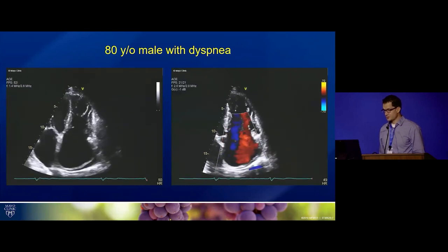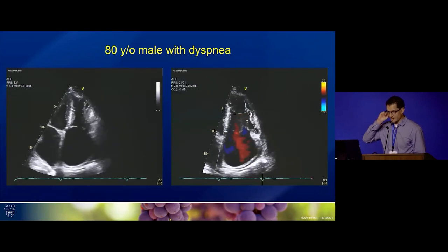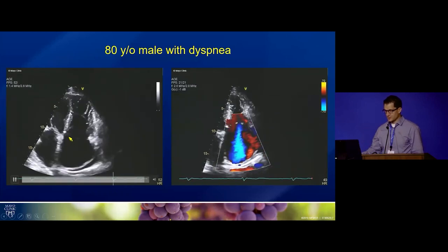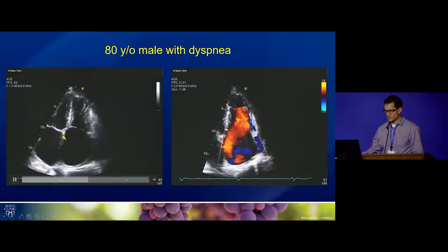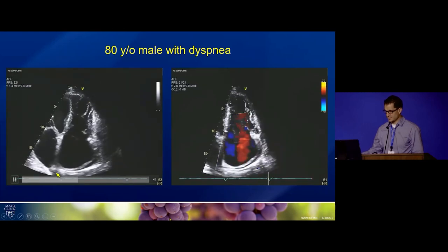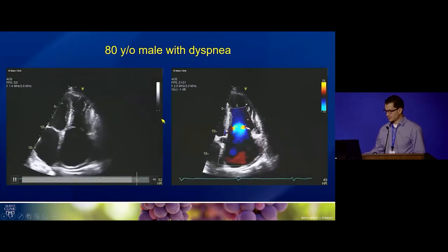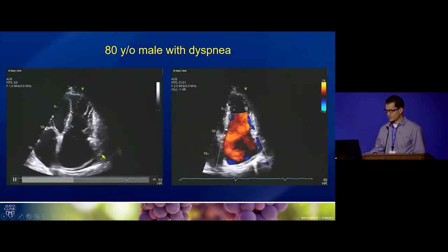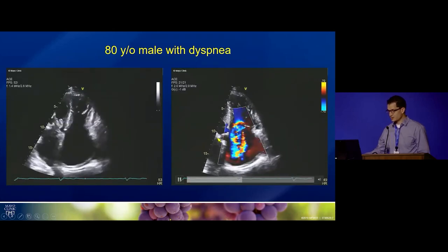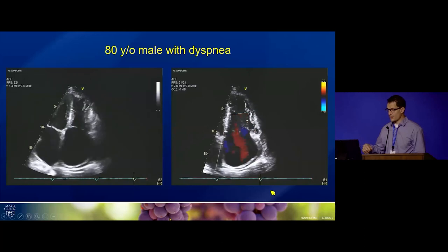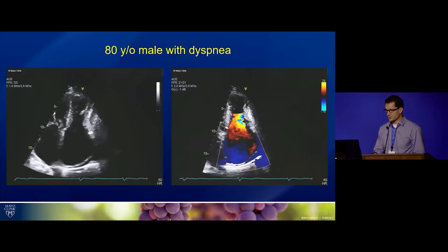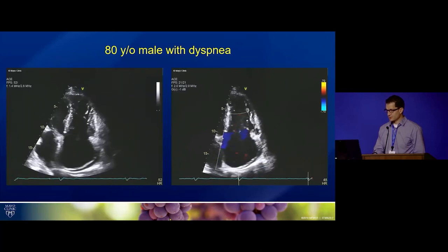These are the apical images in Mayo format, so the RV is on the right. The tricuspid septal leaflet is usually more apically displaced, confirming this is the right ventricle. There's a huge right atrium and a sliver of pericardial effusion. You see a very broad jet of TR. When TR is wide open like this with laminar flow, we can actually underestimate the amount of leakage, but clearly there is a lot of tricuspid regurgitation.